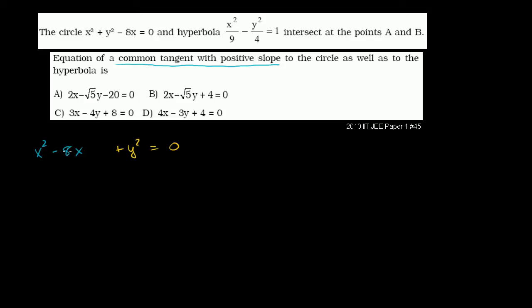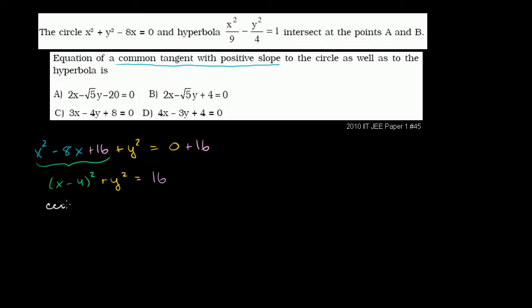Let me add half of the 8 coefficient squared to both sides. Half of negative 8 is negative 4, and negative 4 squared is 16, so we add 16 to both sides. That gives us x minus 4 squared plus y squared equals 16. This is a circle with center at x equals 4, y equals 0, and radius of 4.